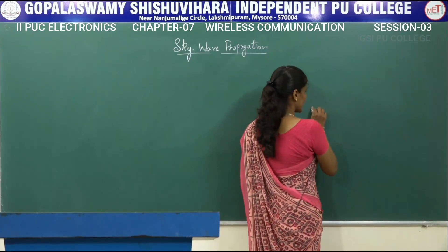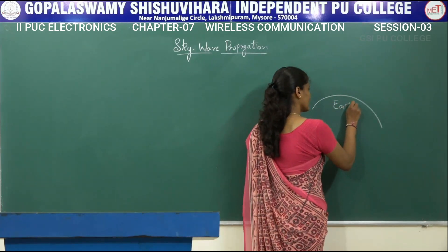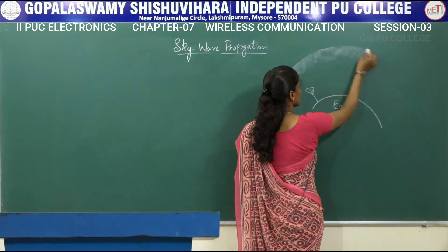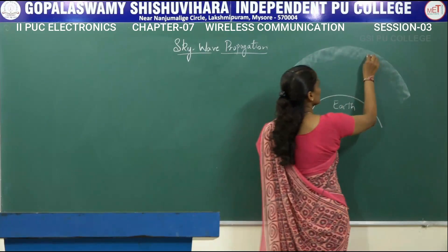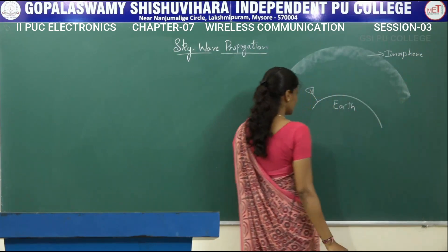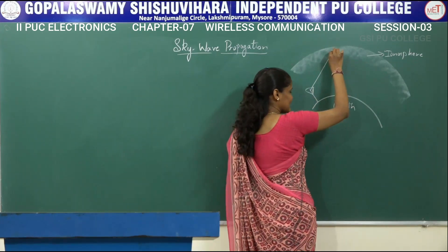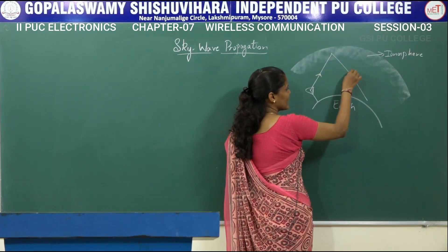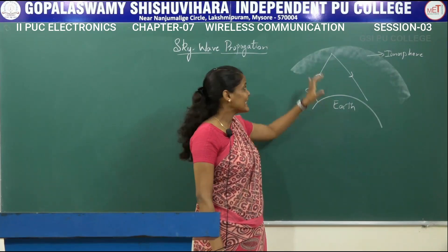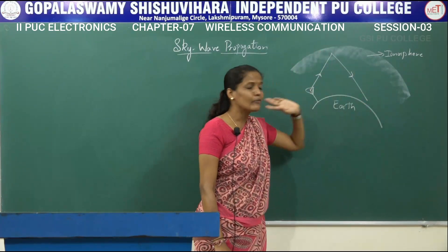The diagram explaining sky wave or ionospheric propagation shows the surface of the earth with a transmitting antenna, and above it a layer called the ionosphere which contains charged particles. When signals are transmitted from the antenna up to the ionosphere, depending on factors like the density of charged particles, critical angle, and critical frequency, the signal is reflected back to the earth.